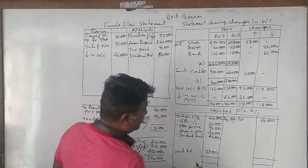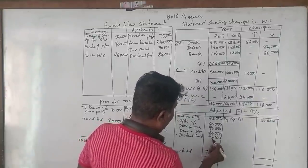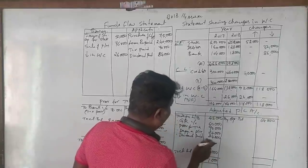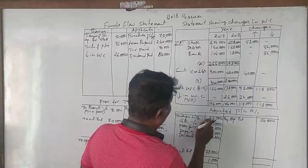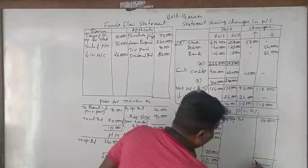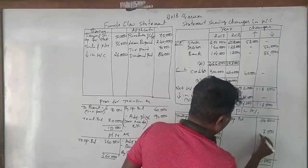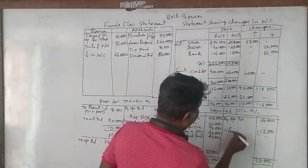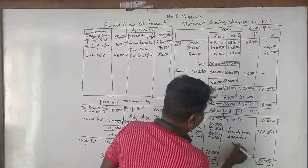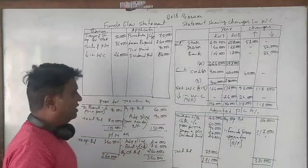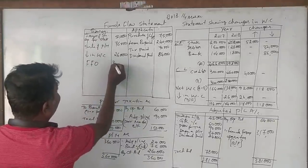Now checking the adjusted profit and loss account, the balancing figure gives us funds from operations of Rs 3,17,000. You can take calculators and check once again if you have any doubts. Funds from operations is Rs 3,17,000.